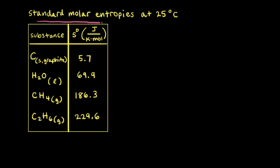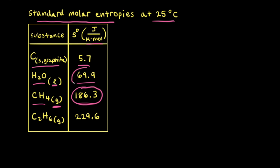Looking at a table of standard molar entropies at 25°C: the standard molar entropy of carbon as graphite is 5.7 J/K·mol, liquid water is 69.9, and methane gas is 186.3. In general, gases have higher standard molar entropies than liquids, and liquids have higher standard molar entropies than solids.